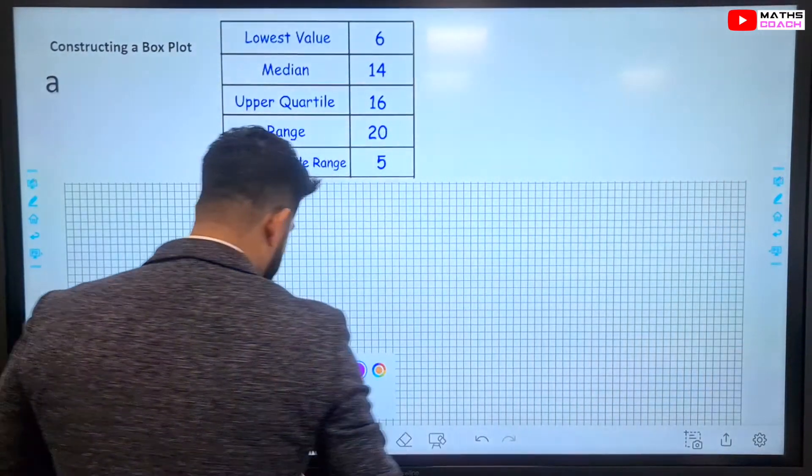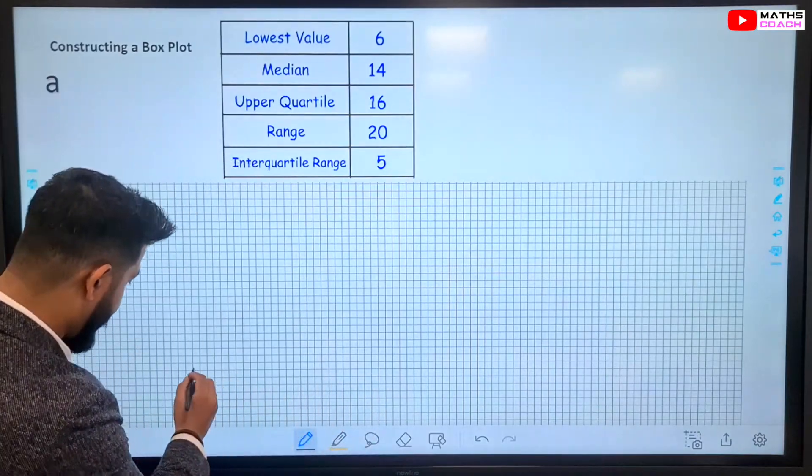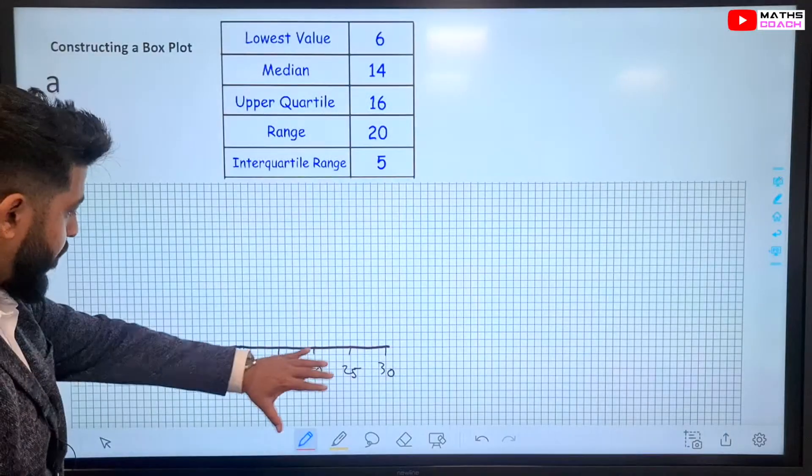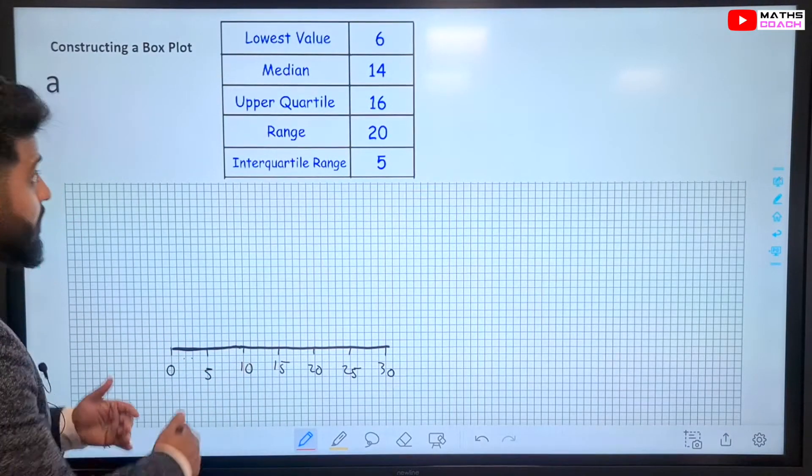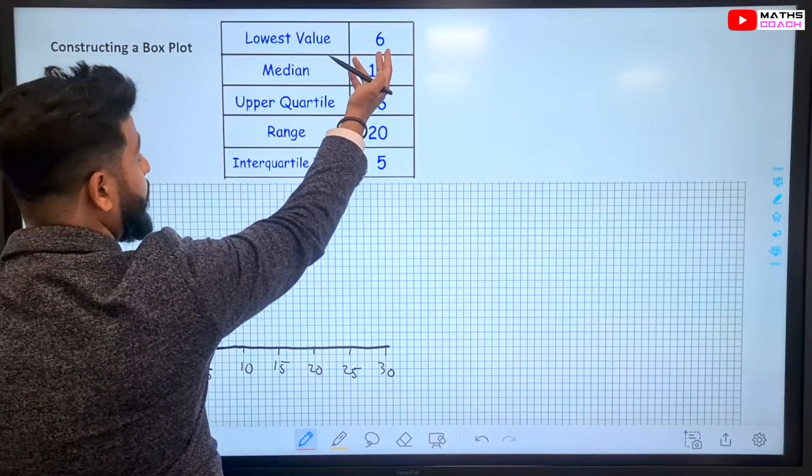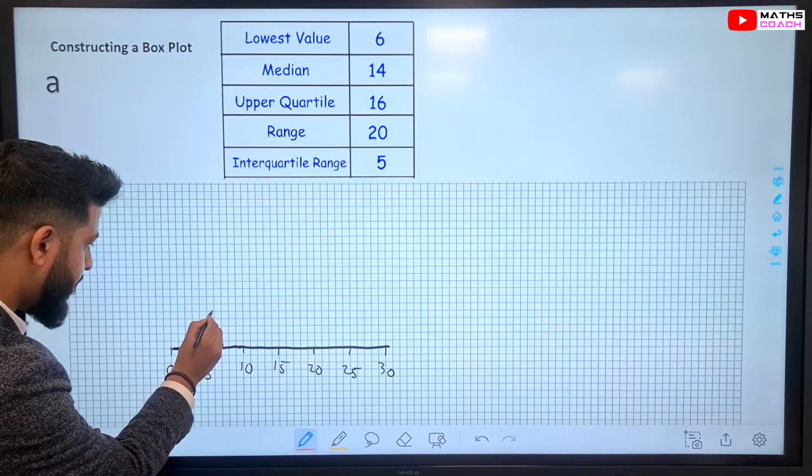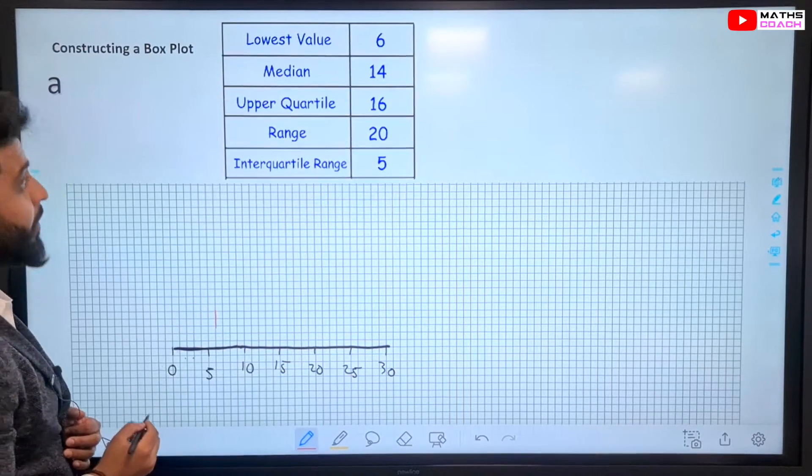Let's do this. Let's start off by drawing a scale for ourselves. I've just drawn my scale here. Let's start with what we know. We know the lowest value. The lowest value is 6. So, we go here and we draw a small one right there.